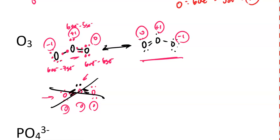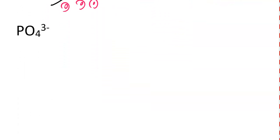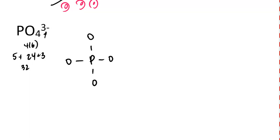So what this teaches us is that for some structures, you're not going to get all zeros. The best you're going to be able to do is try and keep the formal charges to plus one and negative one and have them cancel. But whenever you actually do get the opportunity to shift electrons around to create a more stable structure, you should. Now let's take one more quick example: the phosphate ion. Phosphate has 4 oxygens times 6 valence electrons, that's 24, plus 5 from phosphorus, that's 29, plus 3 more electrons from the 3-minus charge, for a total of 32 valence electrons.